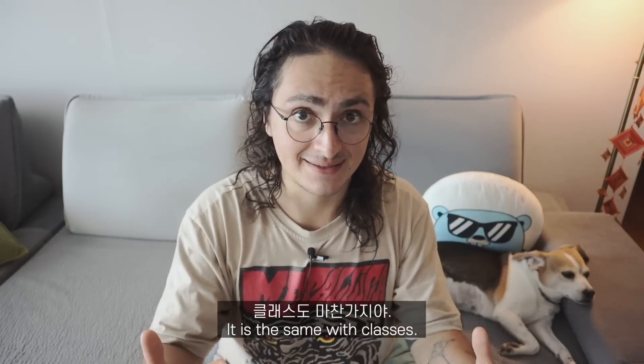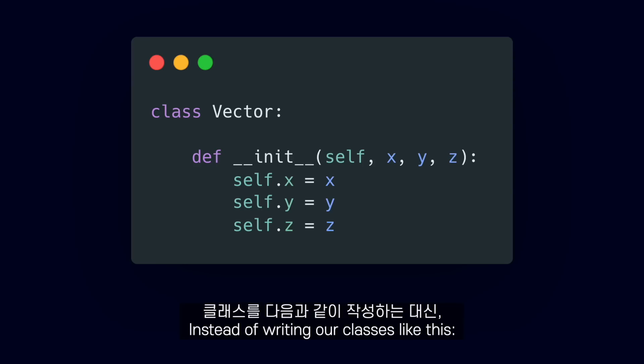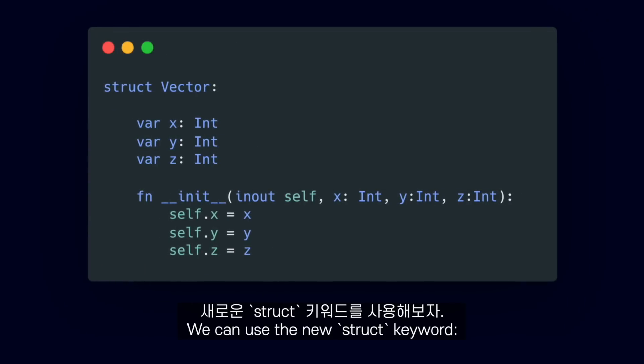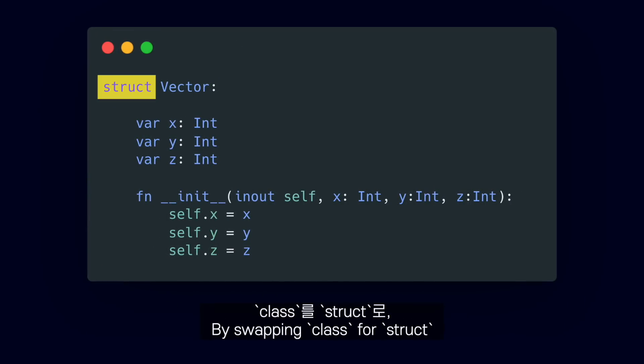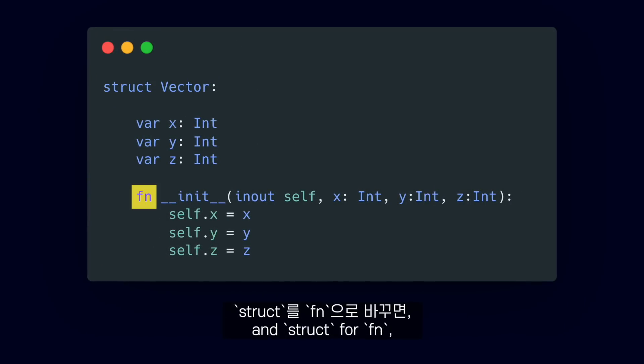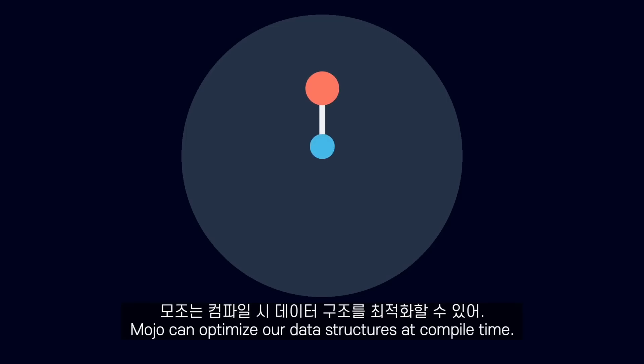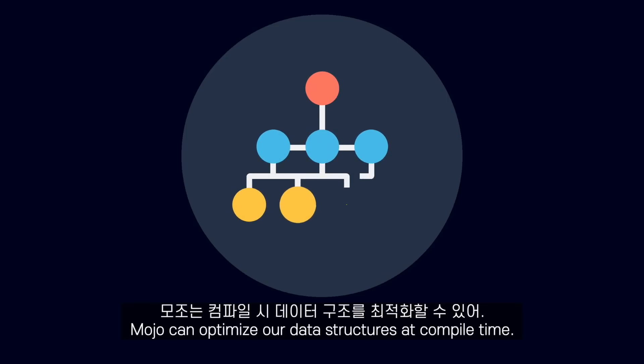It is the same with classes. Instead of writing our classes the traditional way, we can use the new struct keyword. By swapping class for struct and def for fn, Mojo can optimize our data structures at compile time.